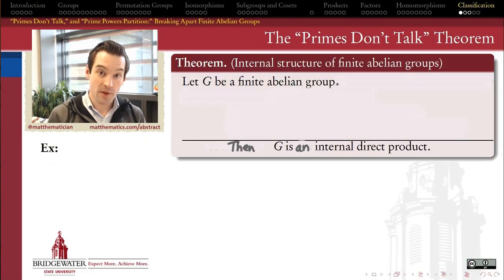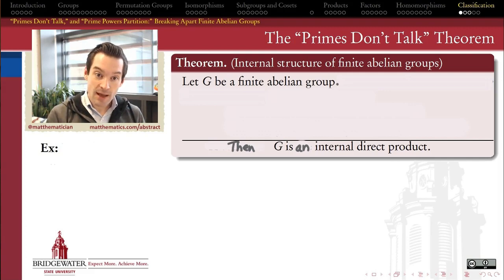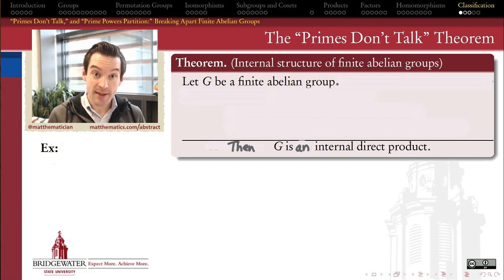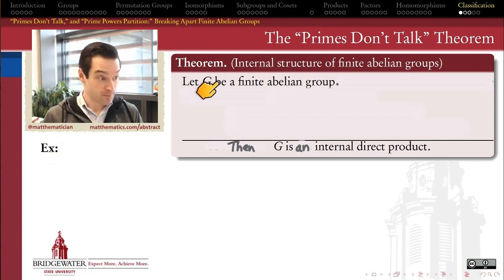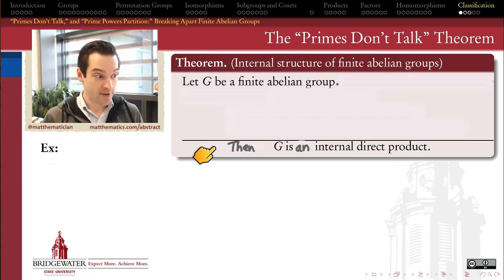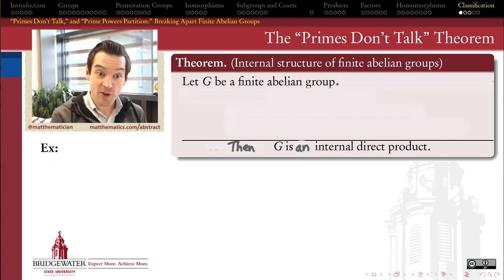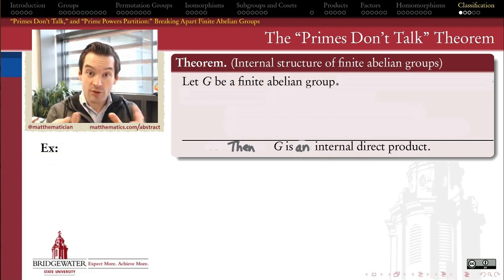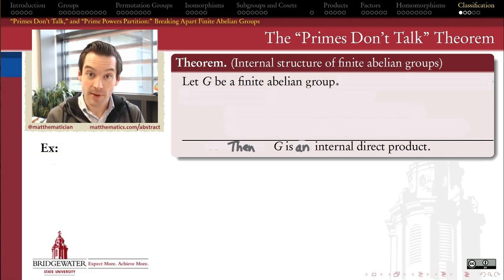The first thing to know about the primes don't talk theorem is that it's what mathematicians call a structure theorem. What it's going to do is tell me not just some important fact about a finite abelian group, but actually completely classify the structure of that group. The basic shape of the theorem is as follows: if we let G be any finite abelian group, the conclusion is that G is an internal direct product — every finite abelian group has this internal times-table structure that we talked about when we discussed direct products.